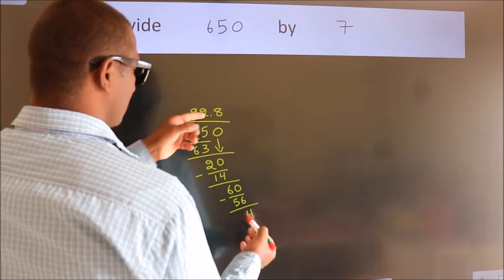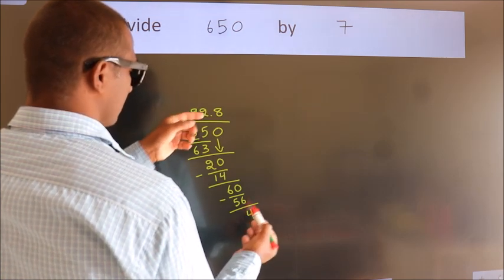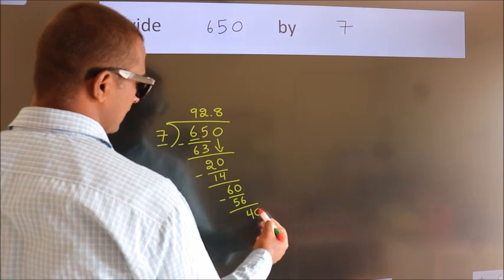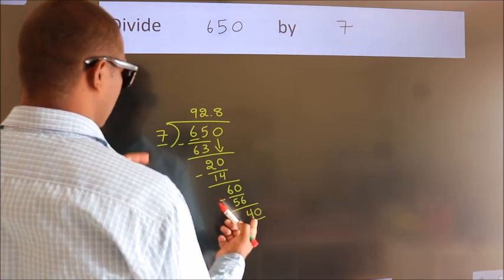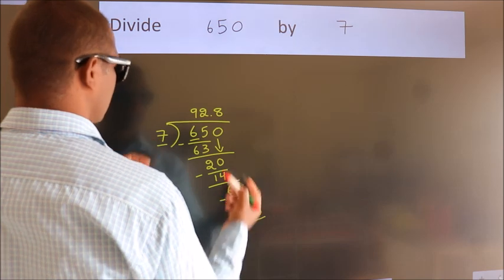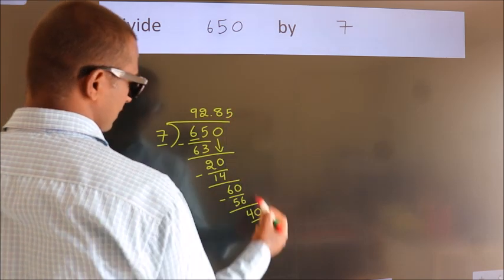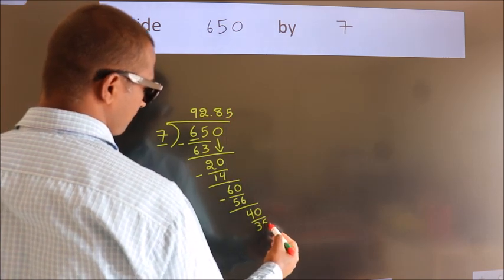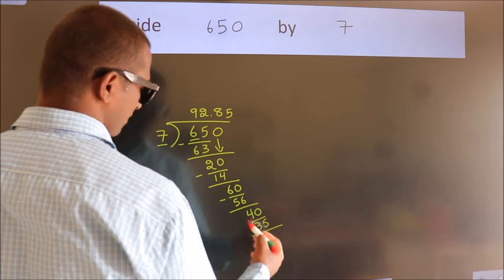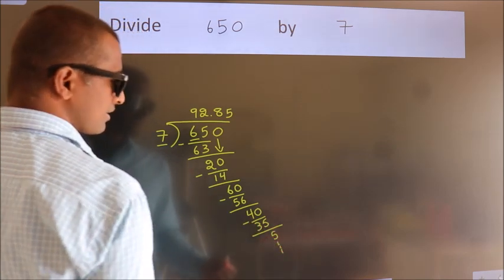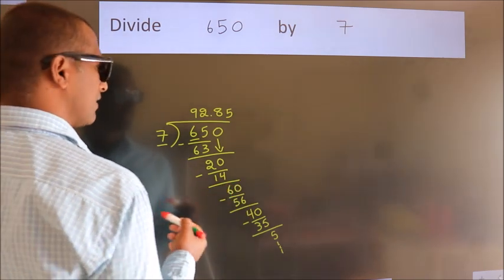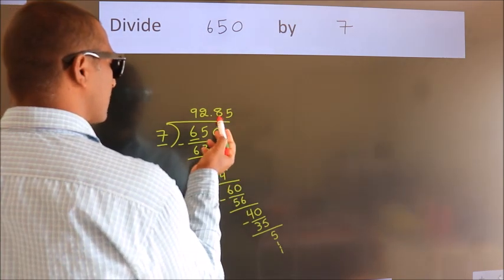After this, we already have the decimal, so directly take 0. So 40. A number close to 40 in 7 table is 7 fives 35. Now we subtract. We get 5, and the division continues. It is enough if we do upto 2 decimal places.